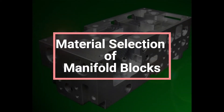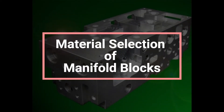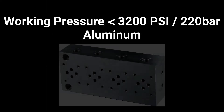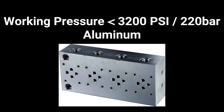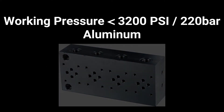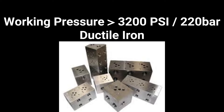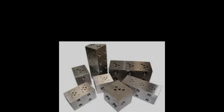Regarding material selection of manifold blocks, hydraulic manifold blocks are usually made from cast iron and aluminum. As a rule of thumb, aluminum is generally used for working pressures of 3,200 psi or 220 bar and lower, while ductile iron is preferred for working pressures greater than 3,200 psi or 220 bar with proper material thickness for the working pressure.